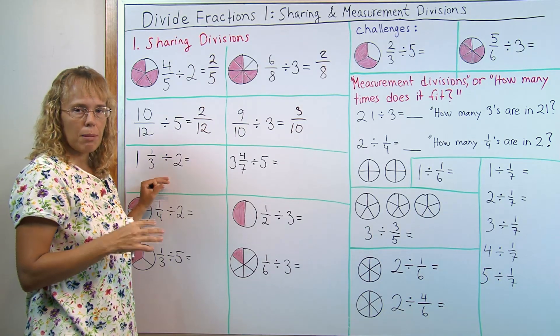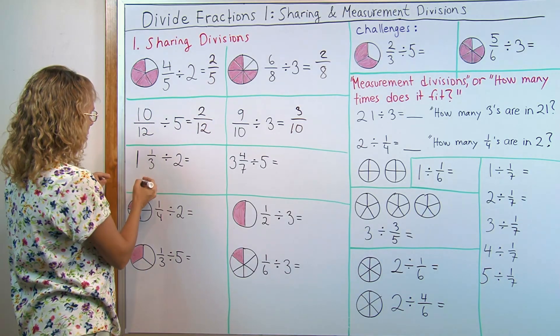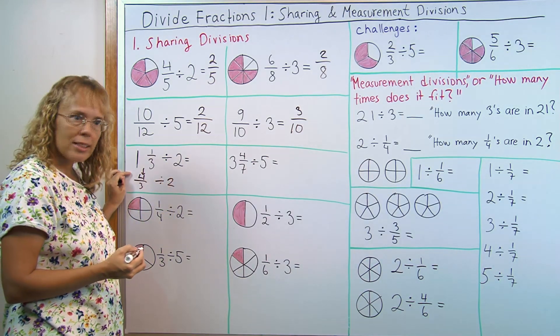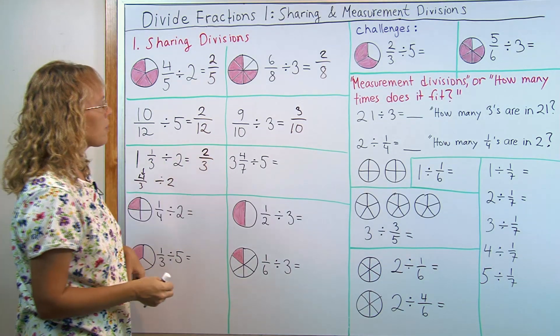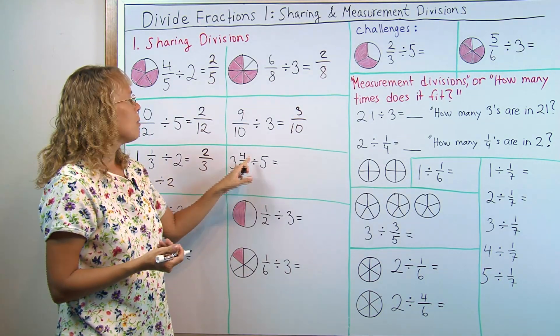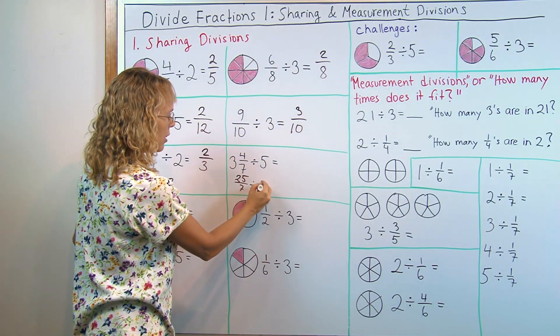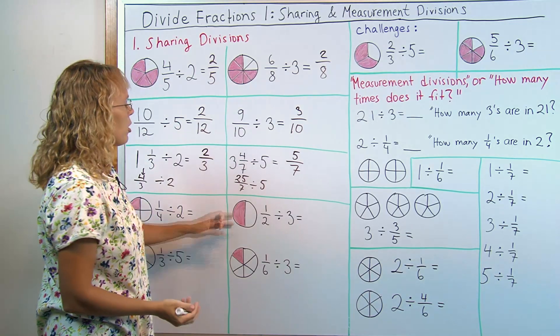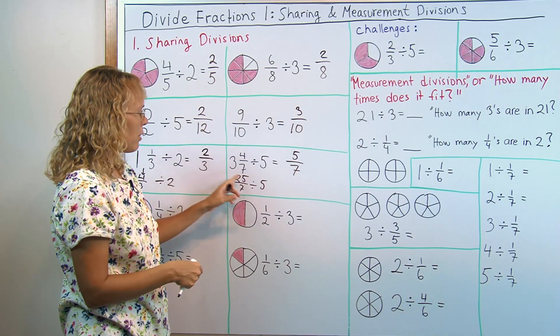You can also do this with some mixed numbers if you choose your problems carefully. One and one-third. Let's write this as a fraction first: four-thirds. And now it is easy to divide by two. You have four slices and two people sharing so each person gets two-thirds. Here we first change this into a fraction. Three times seven is twenty-one plus four is twenty-five. So we have twenty-five sevenths and divide that by five. So each person gets five-sevenths. Of course this won't work with any random mixed number. It has to go evenly here. The division has to be even.